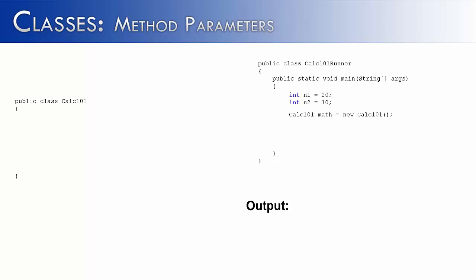Now you'd say there's nothing inside of Calc101 — and you'd be right. So let's put something there so we have a method to use. The method we're going to want to use is called add, and it has a simple task of taking in two values and adding them together. If I want to take in two values, I'm going to have to add some parameters — two integer parameters, num1 and num2.